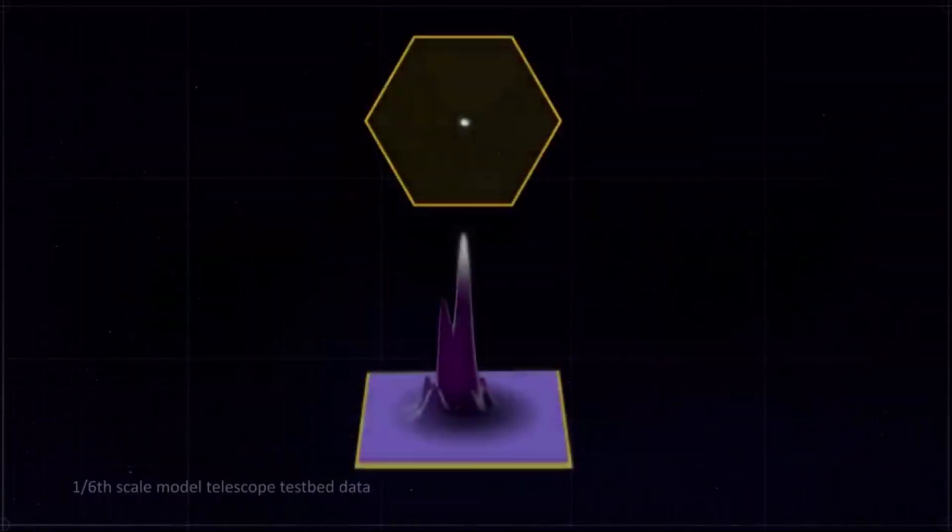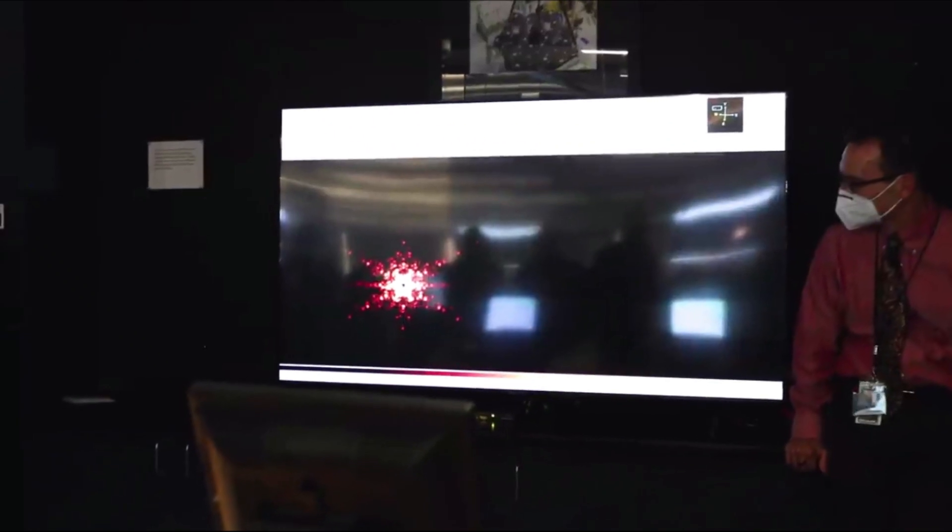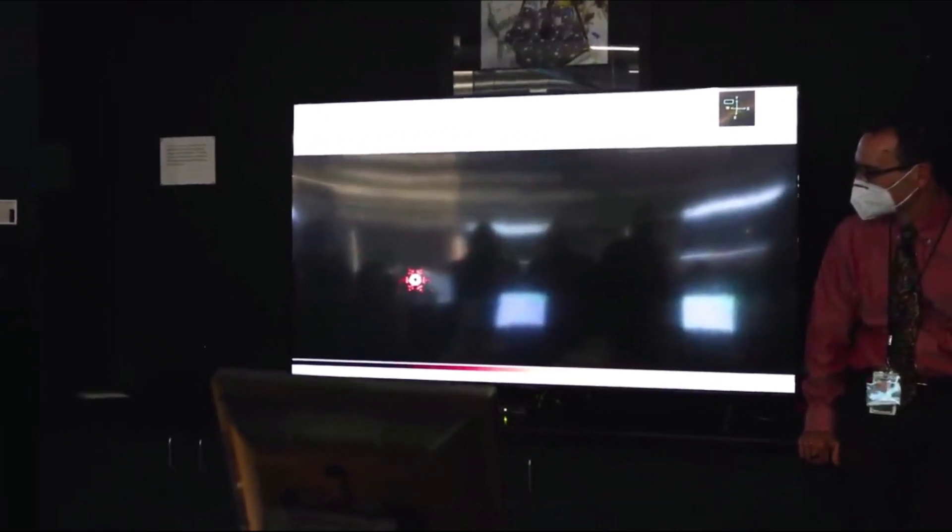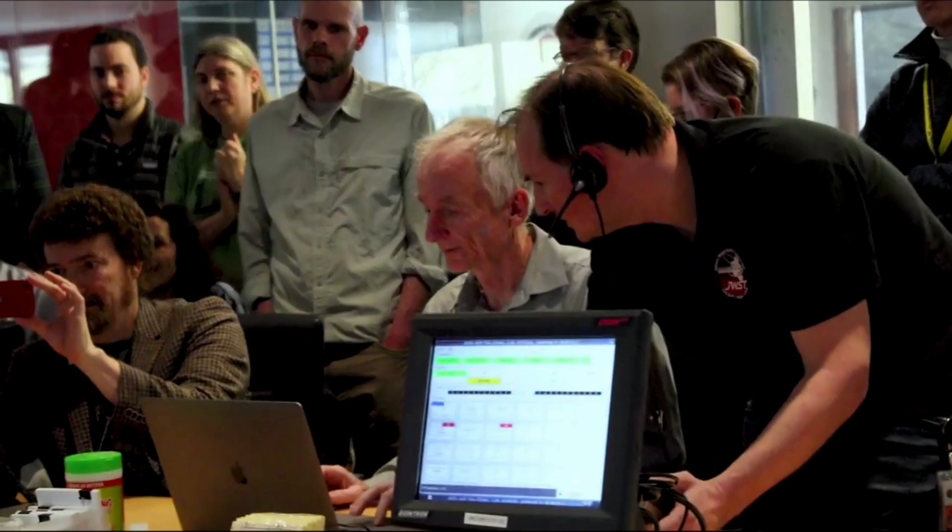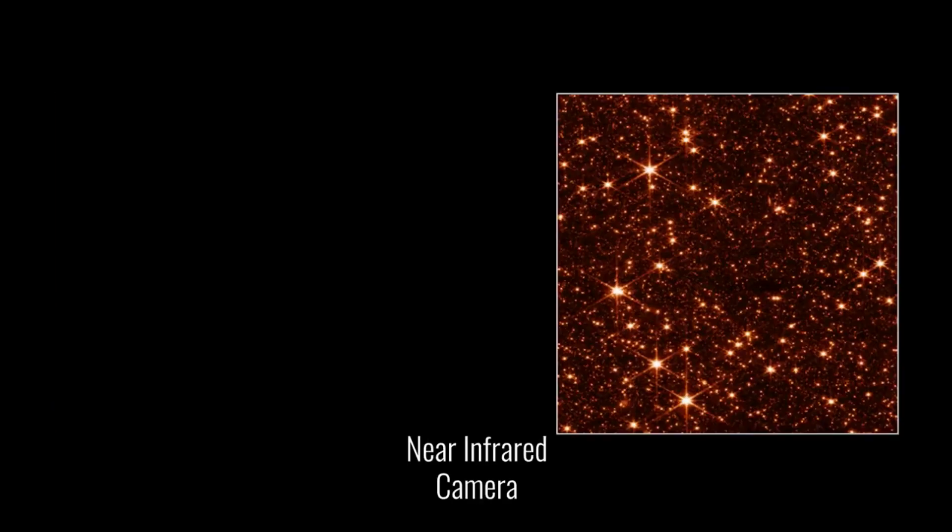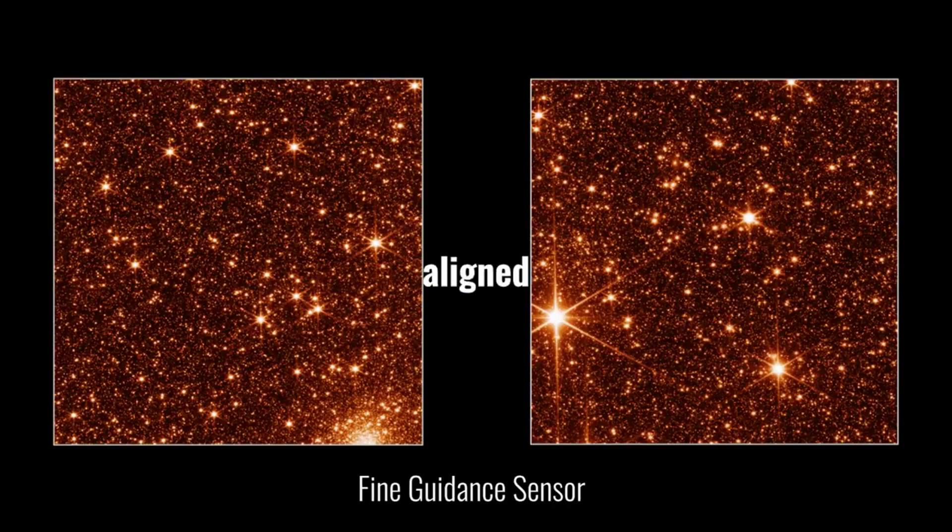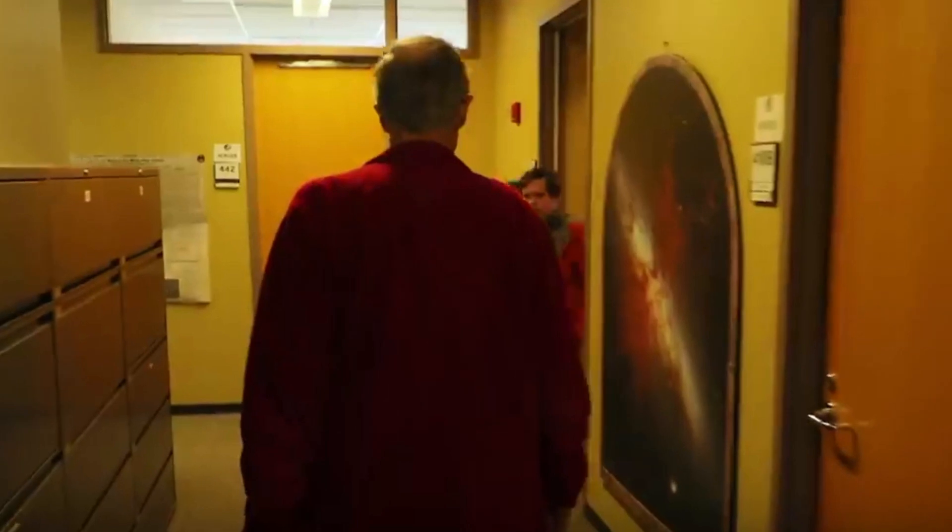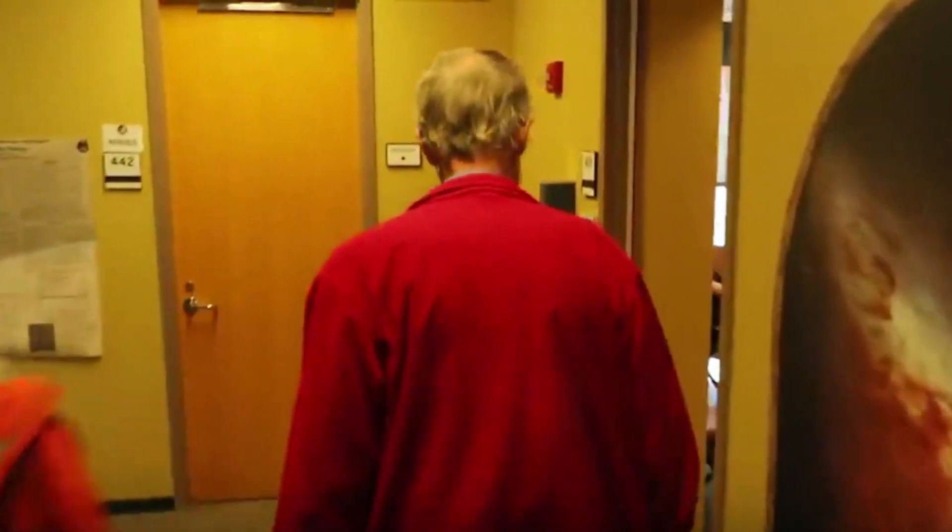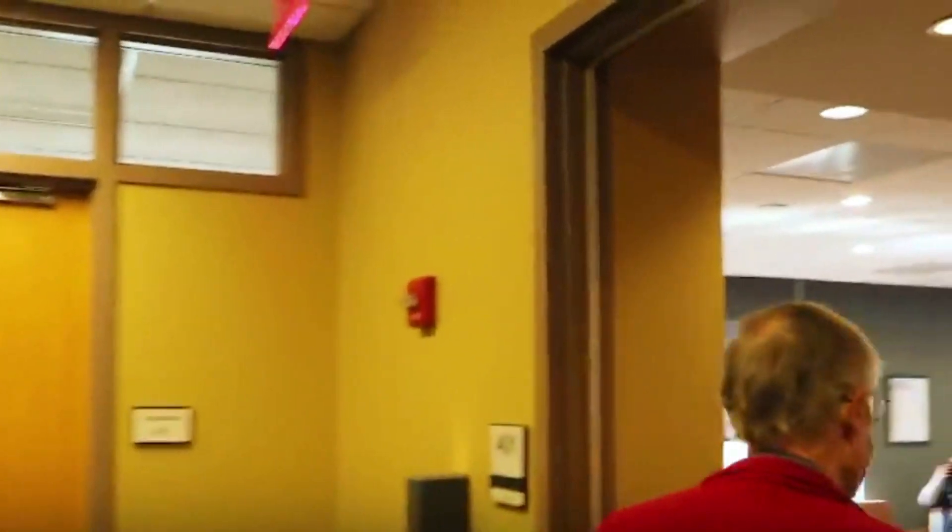Once this is verified, the wavefront sensing and controls process is complete. The alignment of the telescope across all of Webb's instruments can be seen in a series of images that captures the observatory's full field of view. These remarkable test images from a successfully aligned telescope demonstrate what people across countries and continents can achieve when there is a bold scientific vision to explore the universe, said Lee Feinberg, Webb Optical Telescope Element Manager at NASA's Goddard Space Flight Center.